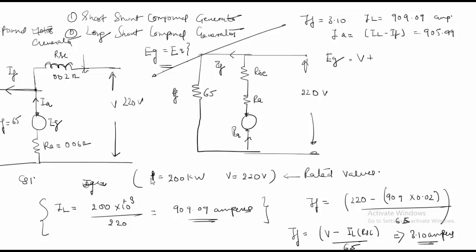So my EG which is equal to V plus IA RA plus IL into RSC which is equal to 220 plus 0.02 into 909.09 plus IL this was for my IL into RSC and my IA is 905.09 into 0.06. So this whole thing will come equal to 292.53 volts. So this is my EG in this case.